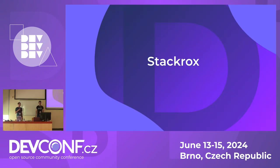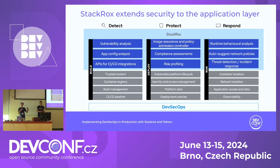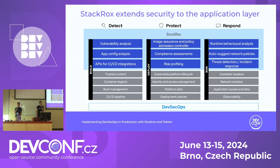We will move on to StackRox. For all of that, you basically need some tooling both in the cluster and in your pipelines. In our demo, we're using StackRox — also known as Advanced Cluster Security by Red Hat — which tackles security in three stages: Detect, Protect, and Respond. In the Detect stage, we do vulnerability analysis, analyze application configuration, and StackRox also offers an API for CI/CD so we can run the CLI tool in our continuous processes.